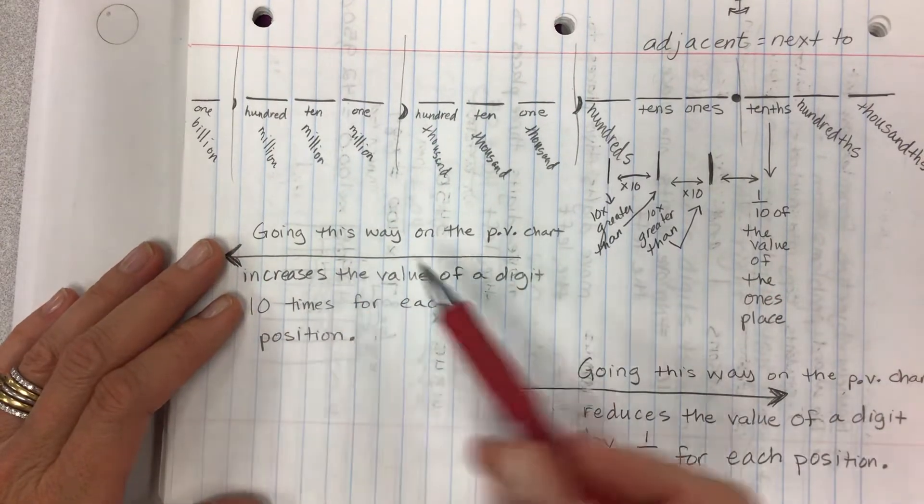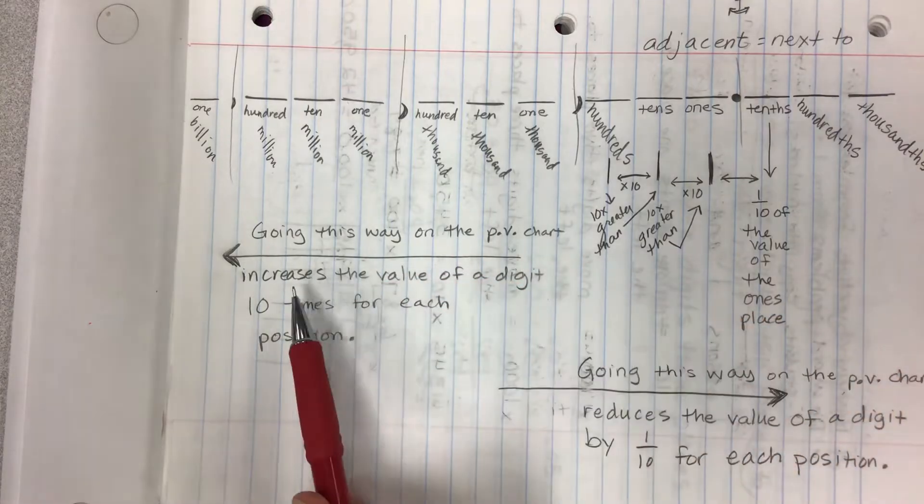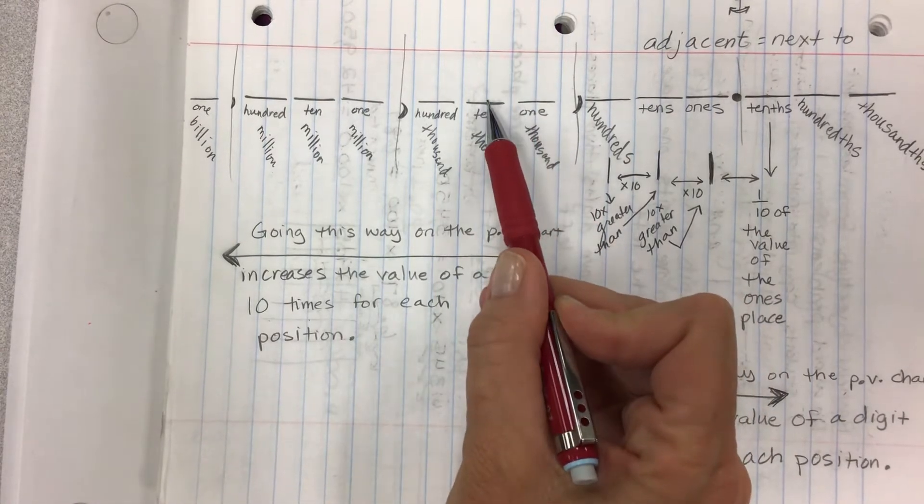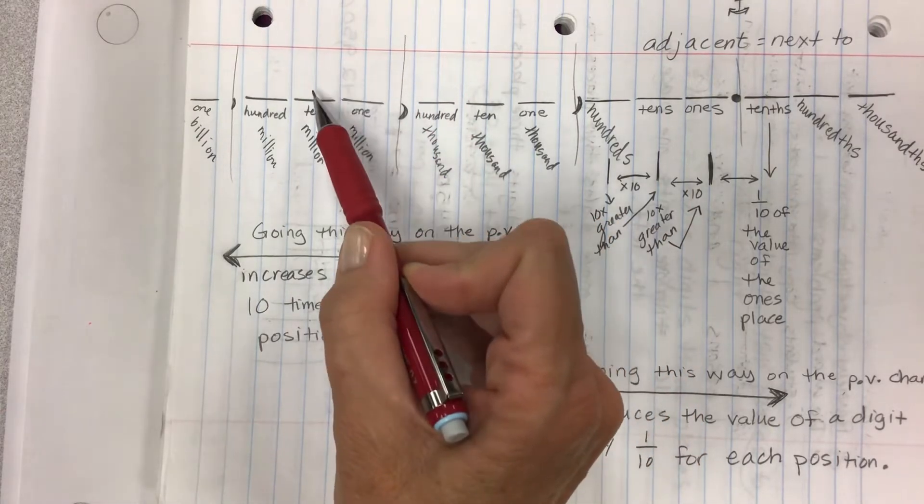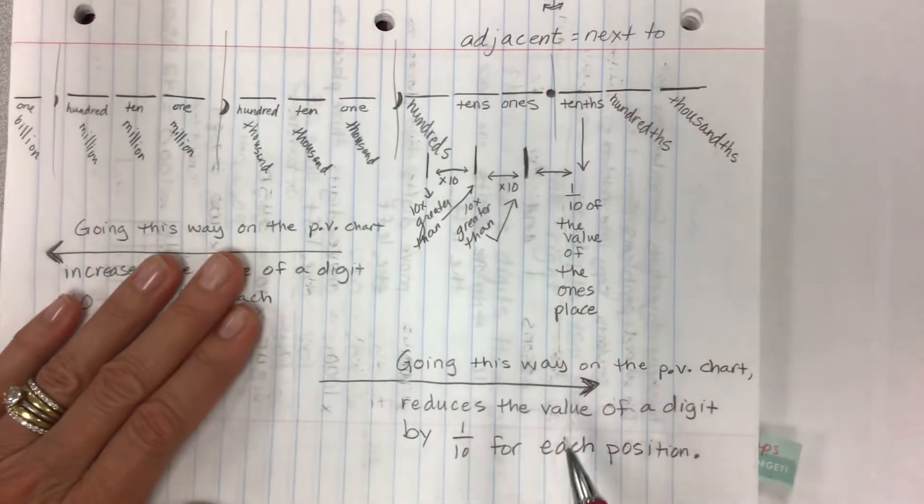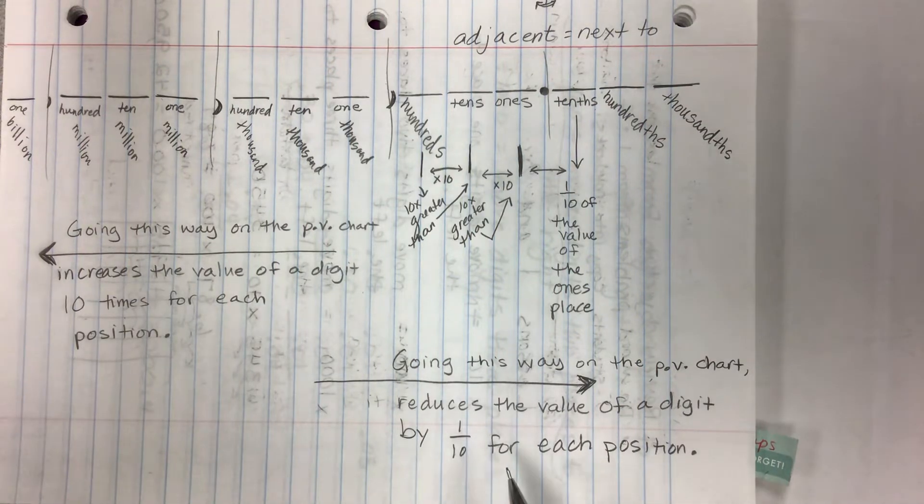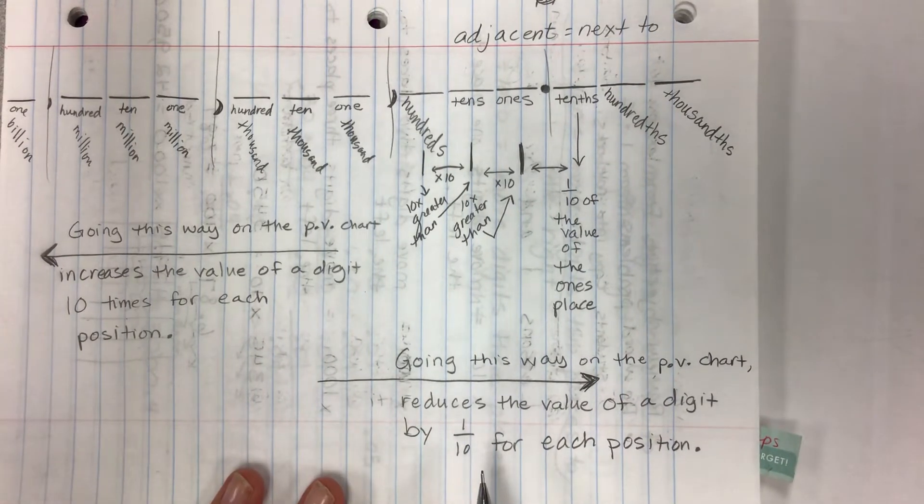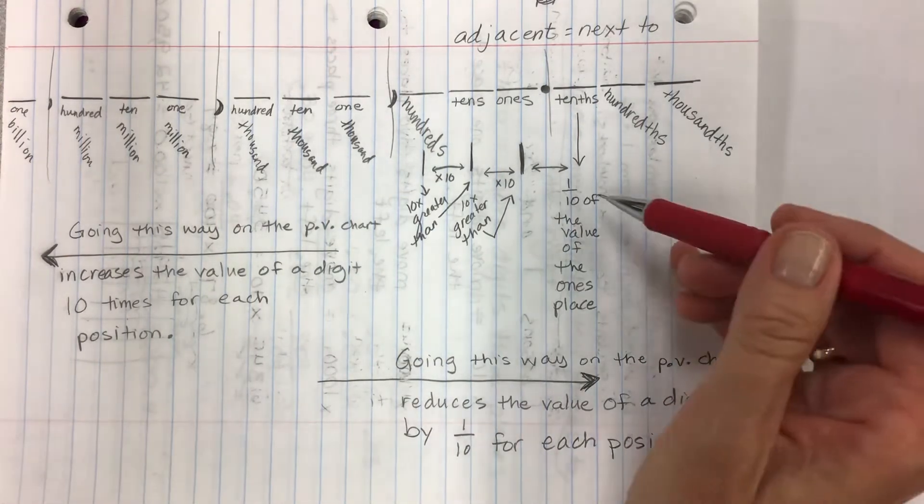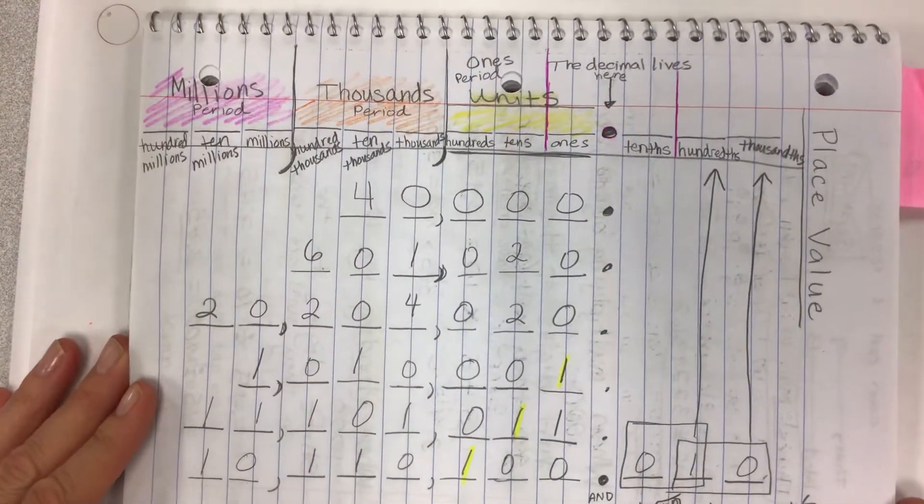Notice and please write in your notes, going this way on the place value chart increases the value of a digit ten times for each position. That means ten times greater for this one, then it goes another ten times greater, and another ten times greater, and so on and so on. If ever you're moving this way on the place value chart, this is reducing the value of a digit by one-tenth for each position. So you could say it's ten times less, a lot of kids will say that, but in the book it's really going to help you to see that it's one-tenth of the value, and that's kind of how we're going to approach it this year. One-tenth of the value going right, that's when we're going to divide, or ten times the value, and that would be multiplying.